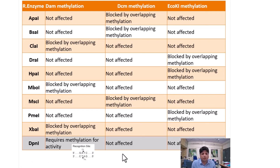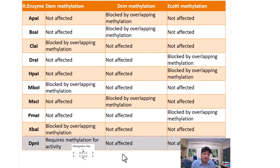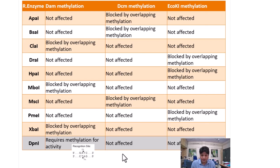If a PCR product has internal restriction sites, first utilize the methylase enzyme to add a methyl group at those sequences within the PCR product. After that, proceed with ligation of either linker or adapter. The linker or adapter sequence lacks that methylated site so the restriction enzyme can cut the linker and produce the sticky end which you further utilize for cloning.